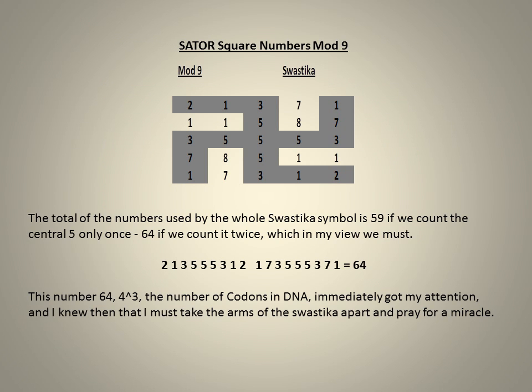At this stage, it seemed clear to me that the Sator Square is the creation cipher and of extraordinary and fundamental importance. This idea was further cemented when I went a little off-piste in my thinking and decided to overlay a swastika symbol onto the 5x5 Sator Square.